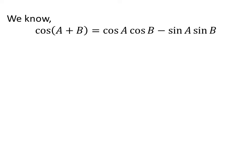We know the trigonometry identity cos(A + B) equals cos A cos B minus sin A sin B.